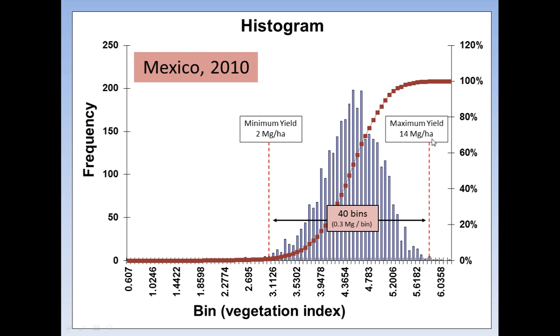for example. So that means we've got 40 bins going across here. If each one has got 3 tenths of a ton per hectare. So there's 40 little bars going across here. We've got 40 bins in that histogram. And so this makes it very convenient now to assign a yield to each one of these bins.